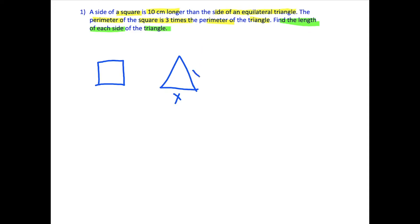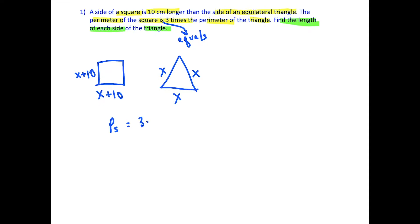So the first thing we could do is model the first sentence with a drawing — a square and an equilateral triangle, which means all the sides are the same. We'll name each side of the triangle x. And if the side of the square is 10 centimeters longer, we'll call all of those sides x plus 10. Now, the next piece of information: the perimeter of the square is three times the perimeter of the triangle. In math, 'is' means equals.